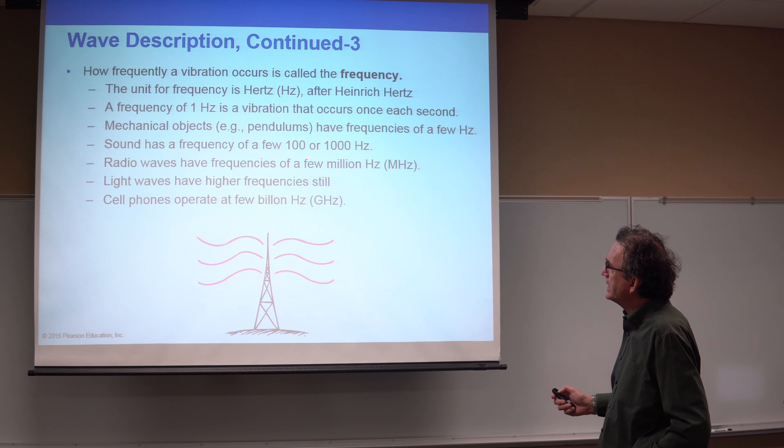Frequency specifies the number of complete excursions from maximum amplitude to minimum amplitude and back to maximum. Whether it's the spring bob or the fishing cork disturbed by a boat wave, the number of waves passing any fixed point per second gives the frequency. If two complete cycles occur in one second, the frequency is two hertz. In mathematical form, the period and frequency are inverses of each other: period equals one divided by frequency, and frequency equals one divided by the period.